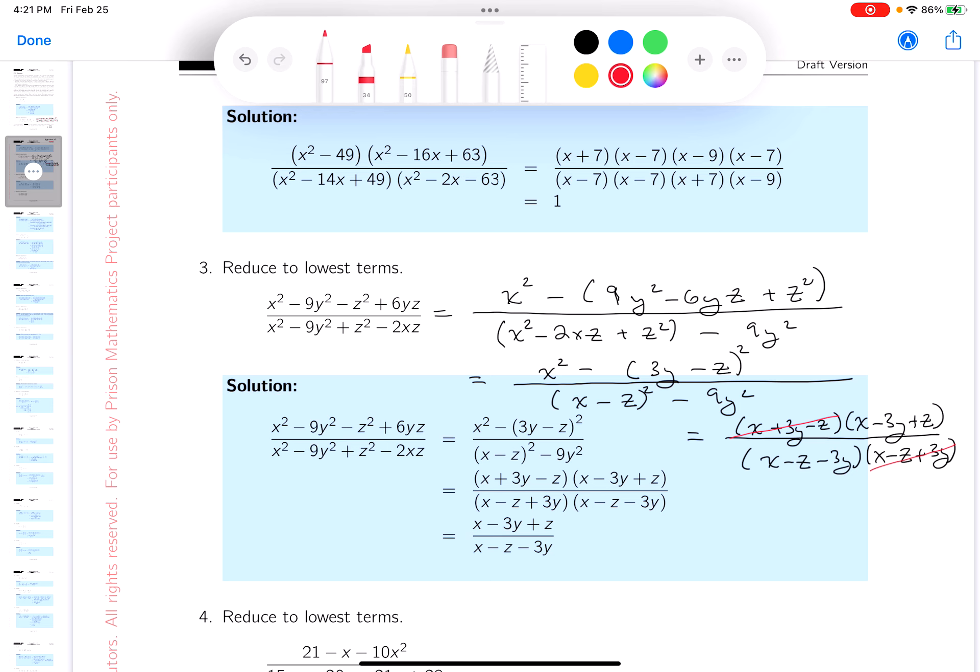By the way, this is conditional. The condition is x plus 3y minus z can't be zero for that to occur. However, we're not going to write the condition down. We're just going to write down our simplified form with the assumption that these conditions remain in effect.